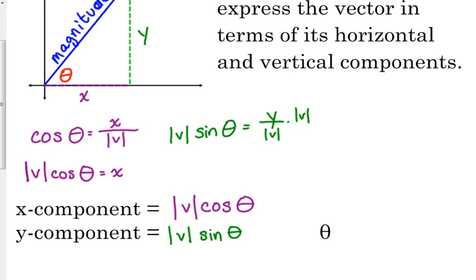Now, that shouldn't be too difficult to remember, because that's just like the unit circle. On the unit circle, the x coordinate gives you the cosine. So, x component, cosine of the angle. Y component, sine of the angle. Of course, you've got the magnitude in there, too.